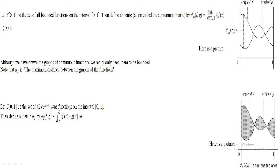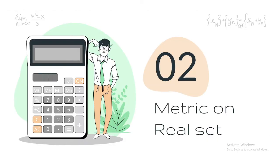Here C([0,1]) is the set of all continuous functions on the interval [0,1]. I have defined a metric d1(f,g) equal to the integral from 0 to 1 of |f(x) minus g(x)|, which represents the area between the two function graphs. The shared area between the graph of f and the graph of g is the metric, and this also satisfies all requirements of a metric. Note that in functional analysis, bounded functions and continuous functions are considered equivalent in this context.